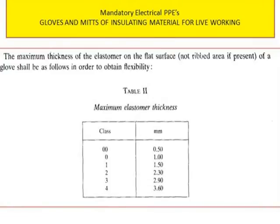The maximum thickness of the elastomer on the flat surface differs by class. For class double zero: 0.50 mm. For class zero: 0.50 mm. For class one: 1.0 mm. For class two: 1.5 mm — a seemingly small but very significant difference. Class two: 2.30 mm. Class three: 2.90 mm. Class four: 3.60 mm.